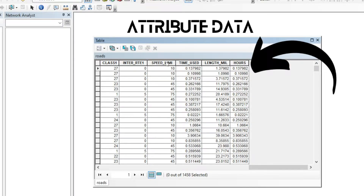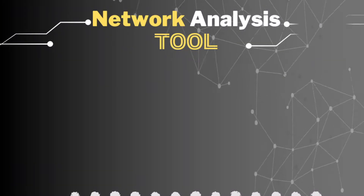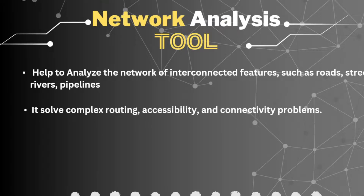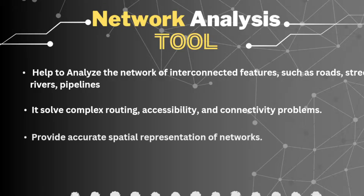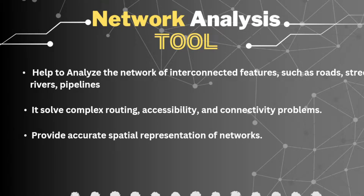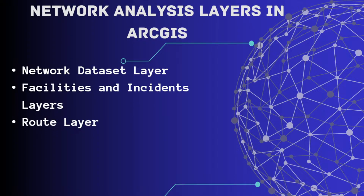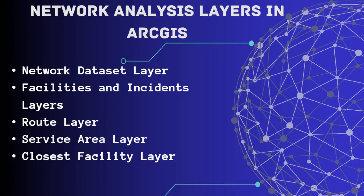The three compulsory requirements are: speed limit, travel time, and length of each line segment. Network analysis helps to analyze interconnected features such as roads, streets, and pipelines. It solves complex routing problems and location-allocation problems.